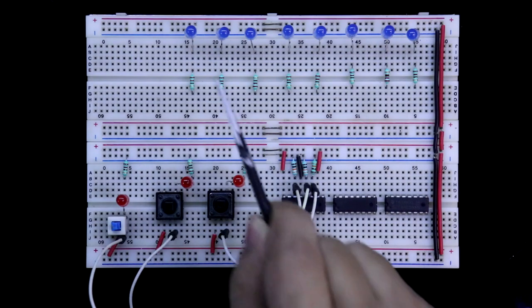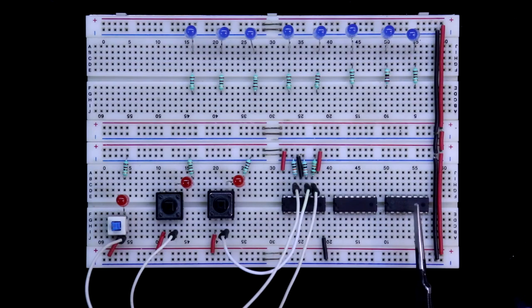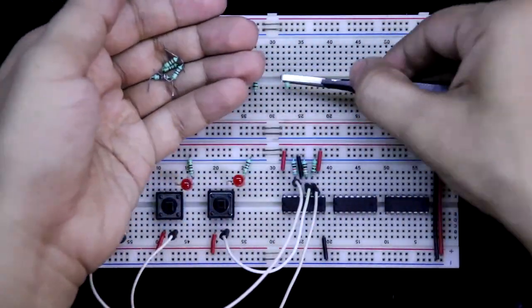With one IC, we can connect eight outputs. Now we have three ICs, so we will have 24 outputs. First, let me remove all this LED.